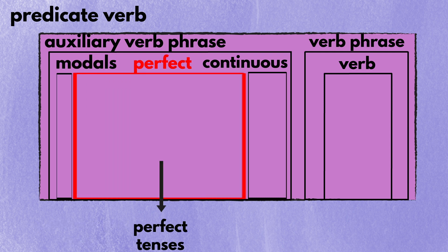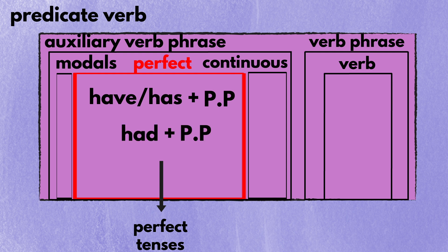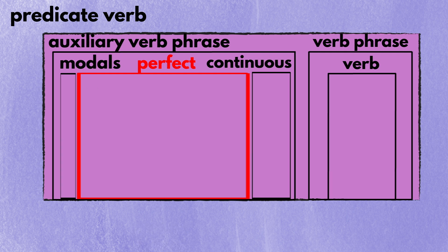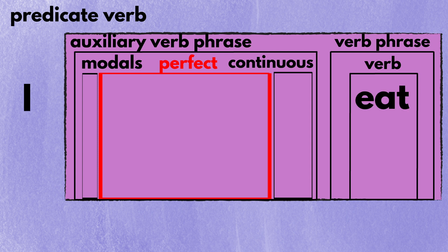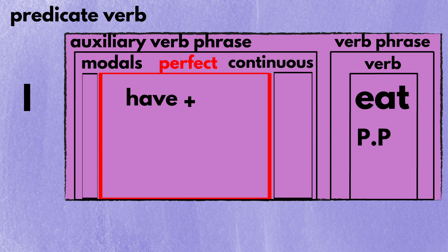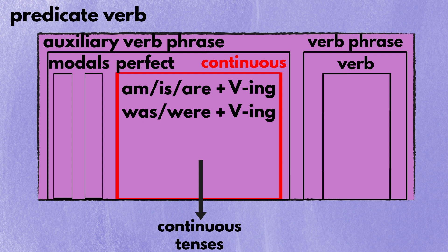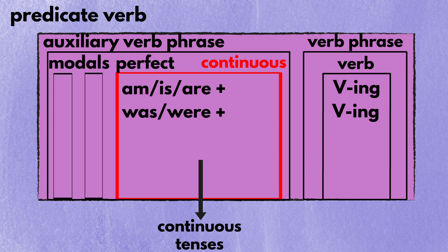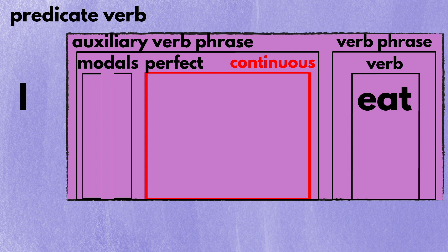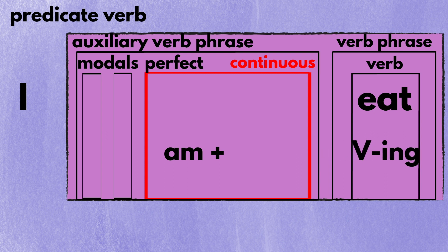The perfect is for perfect tenses. Put have or has plus pp, or had plus pp. The pp means that the verb coming after have, has, or had has to be in its pp form. For instance, if I want to change the sentence I eat into the present perfect tense, I must put have plus pp in the perfect, and since the verb eat comes right after have, change eat into its pp form eaten. The continuous is for continuous tenses. Put am, is, or are plus ing, or was or were plus ing. The ing means the verb that comes after must be in its ing form. For example, to change I eat into the present continuous tense, put am plus ing, and change eat into its ing form eating.